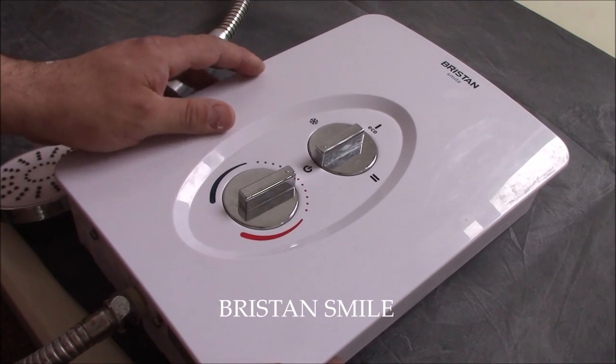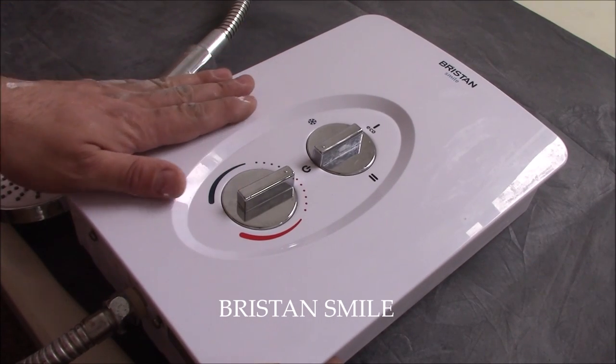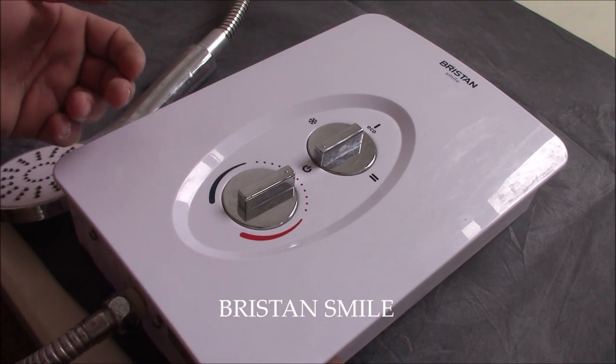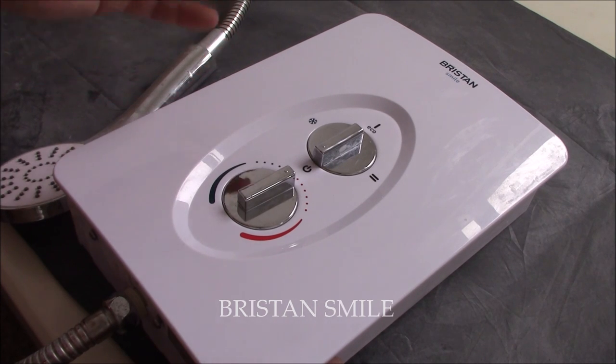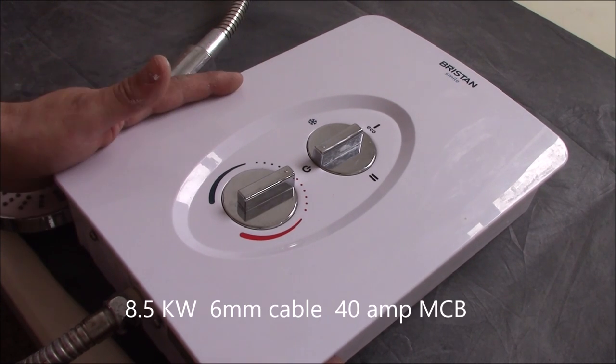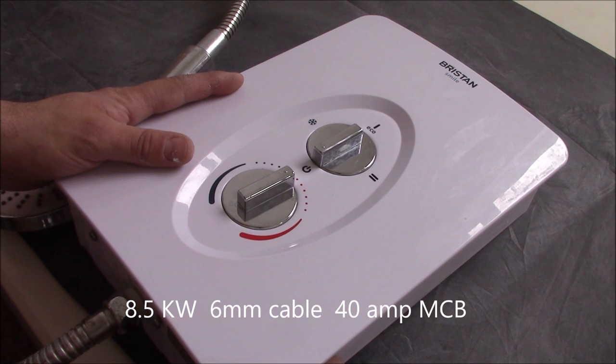This one is Bristan Smile and you see it's used one. I had to remove it before, put new tiles, and then I'm gonna install it in the same place. This is 8.5 kilowatts shower on 6mm cable and 40 amp MCB at the fuse box.